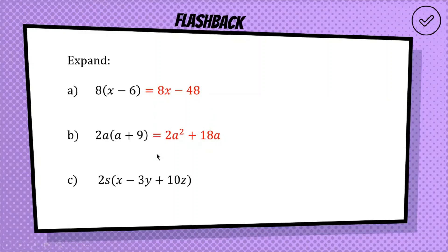And now for the third one, we've got a triple expansion. We're going to multiply everything inside by 2s. And well done if you got 2s times x is 2sx. And we have a minus, and we have 2s times 3y would be 6sy. Now we have a plus, and 2 times 10 is 20. And s times z, we write sz.